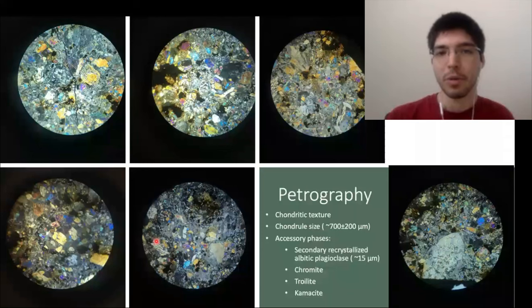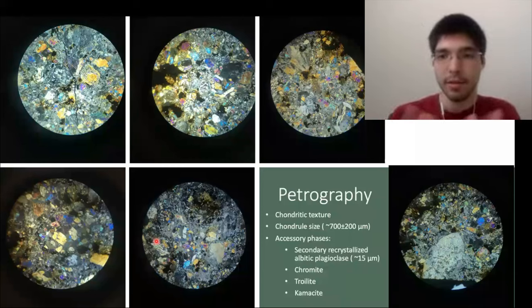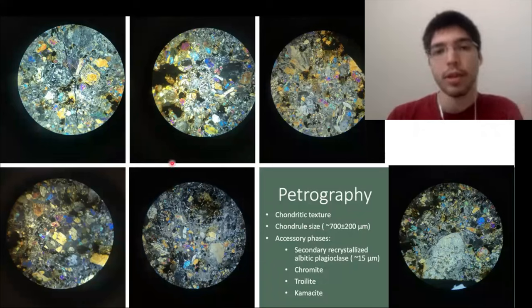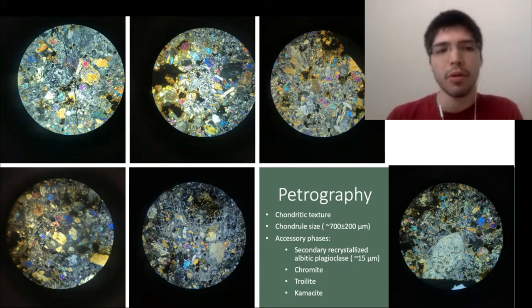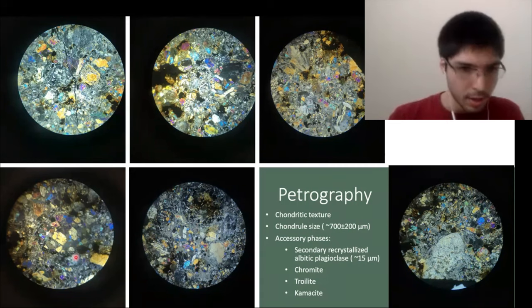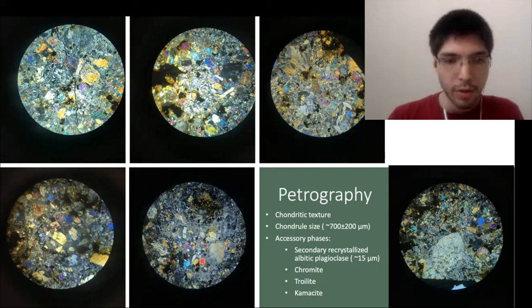Now let's get to the really cool part — the petrography. These are cross-polarized light (XPL) images of the thin section. Looking through the images, this is a typical chondritic texture. We can see a barred olivine chondral, a radial pyroxene chondral, other chondral outlines, and a porphyritic olivine — possibly porphyritic olivine-pyroxene texture — along with a couple of other chondrules.